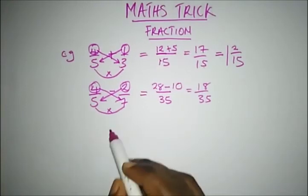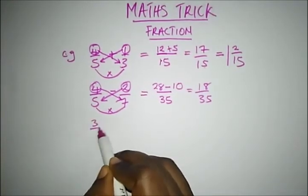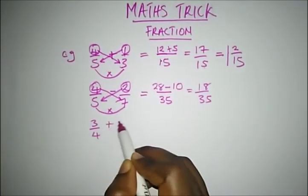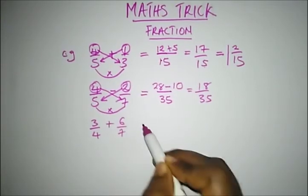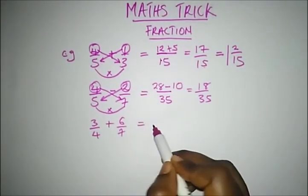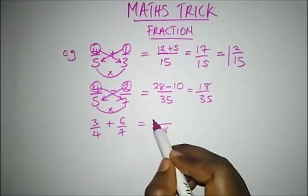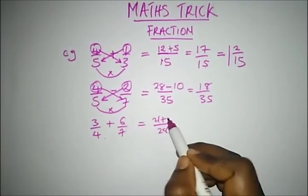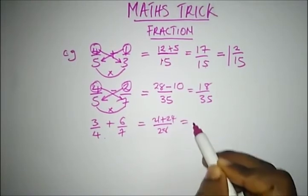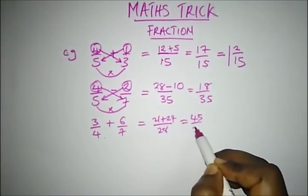Let's quickly also do this example. If we have 3 over 4 plus 6 over 7, within 3 seconds, what's our answer? We draw this. This is 28. And this is 21 plus 24. So what's our answer? It's 45 over 28.